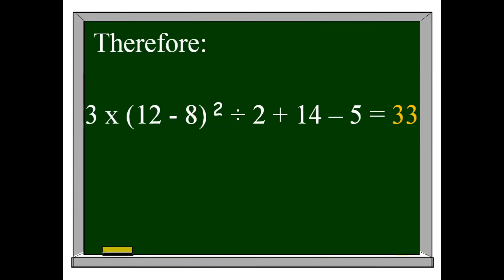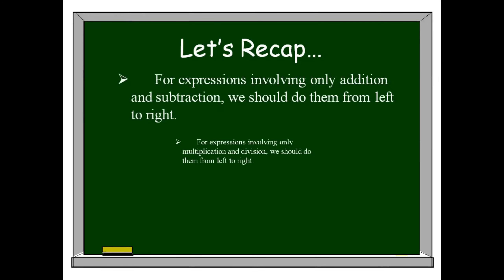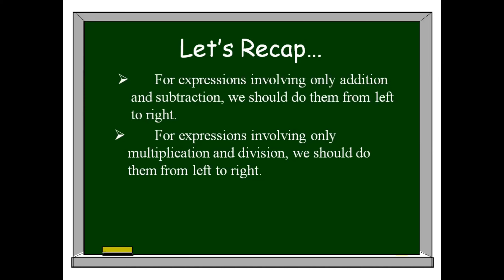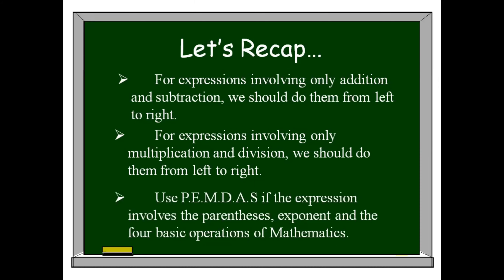Therefore, for our expression 3 times the quantity of 12 minus 8, squared, divided by 2, plus 14 minus 5, the answer is 33. To recap: for expressions involving only addition and subtraction, do them from left to right. Likewise, for expressions involving only multiplication and division, do them from left to right. Otherwise, use PEMDAS if the expression involves parenthesis, exponents, and the four basic operations.